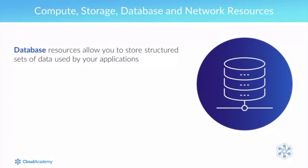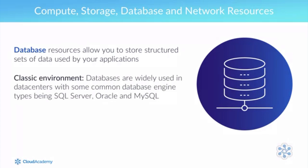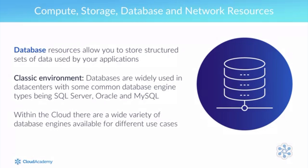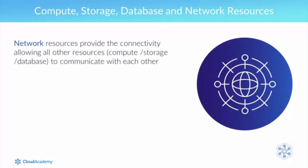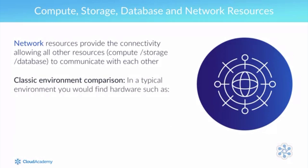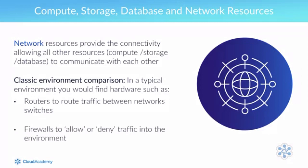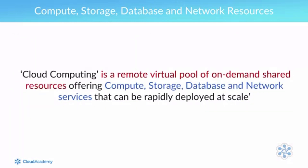Database resources allow you to store structured sets of data used by your applications. Common database engine types in data centers include SQL Server, Oracle, and MySQL; within the cloud there are a wide variety of database engines available for different use cases. Network resources provide the connectivity allowing all other resources — compute, storage, and database — to communicate with each other. In a typical environment you would find hardware such as routers to route traffic, network switches to provide backbone connectivity, and firewalls to allow or deny traffic into the environment.